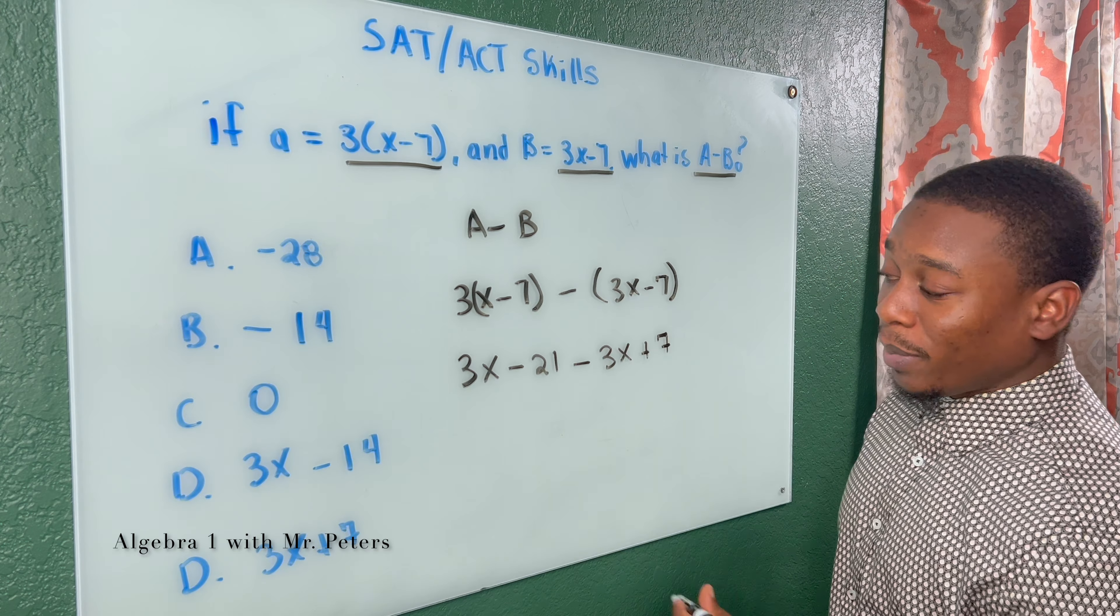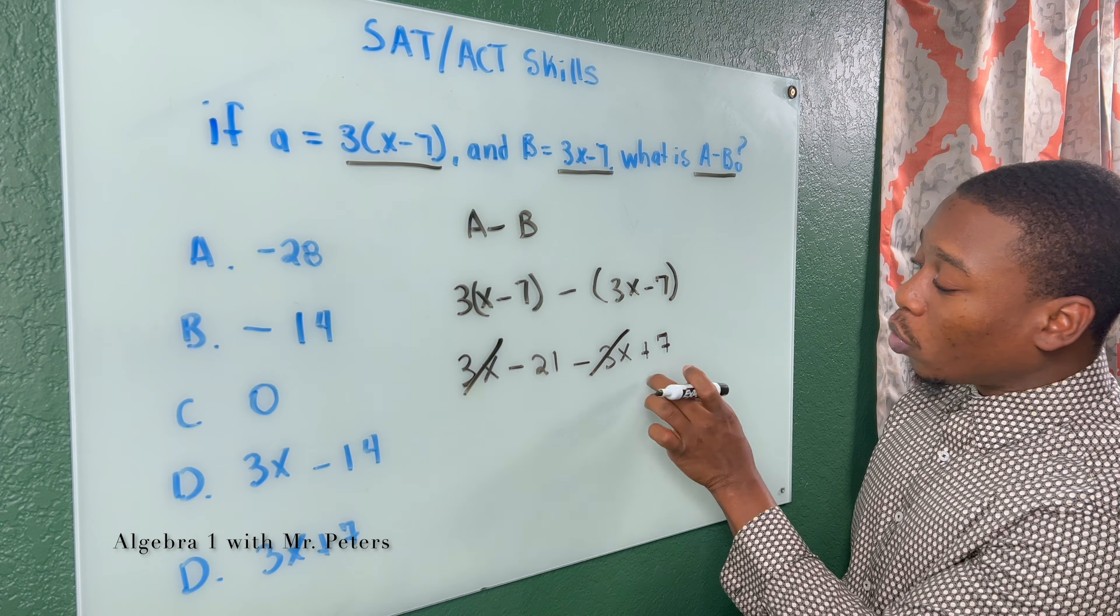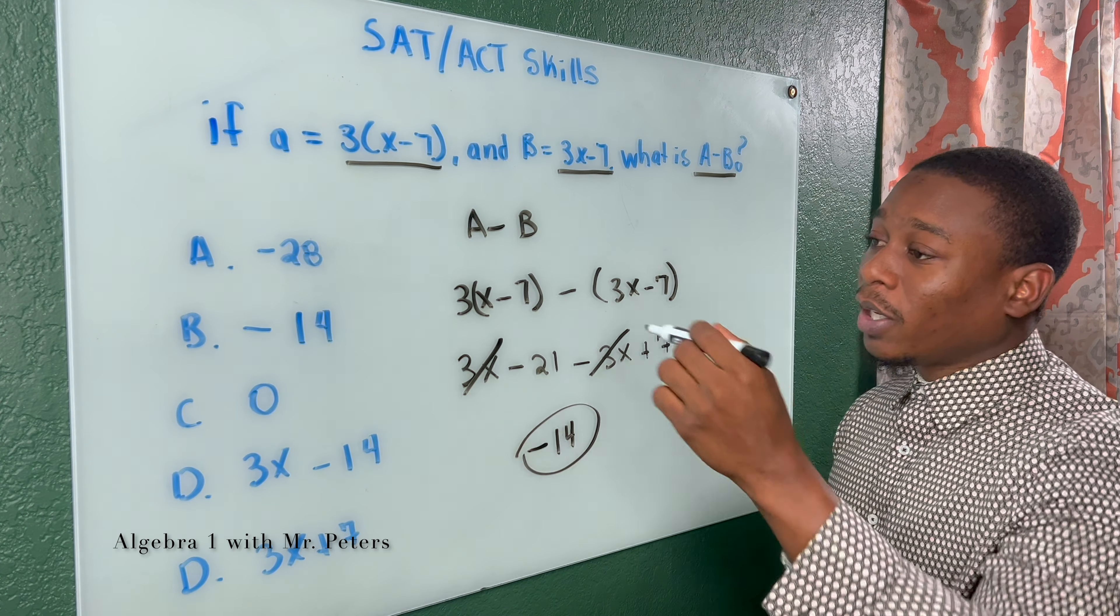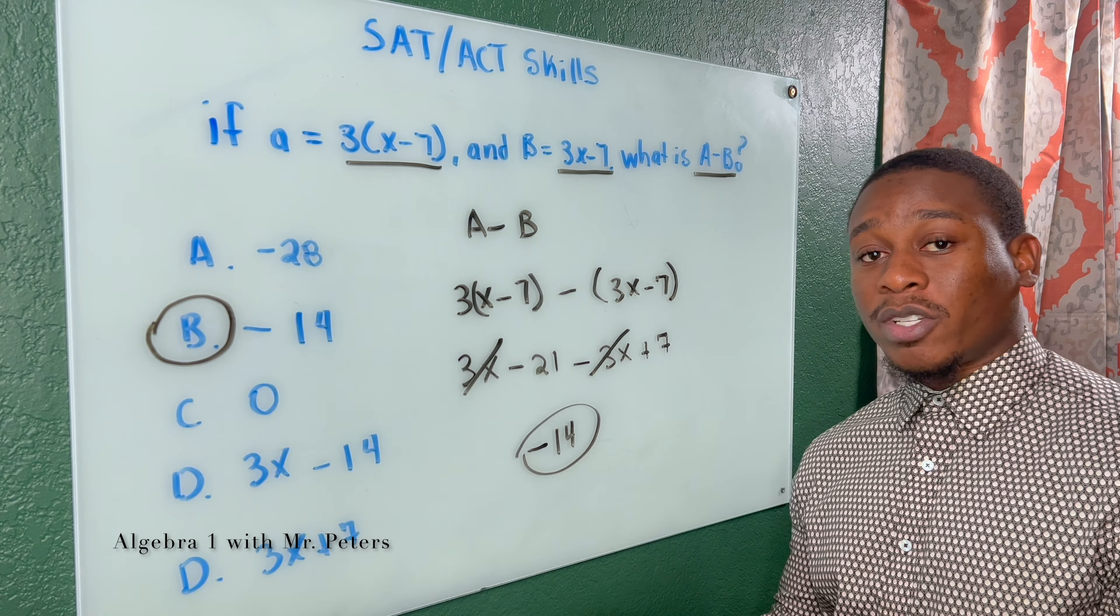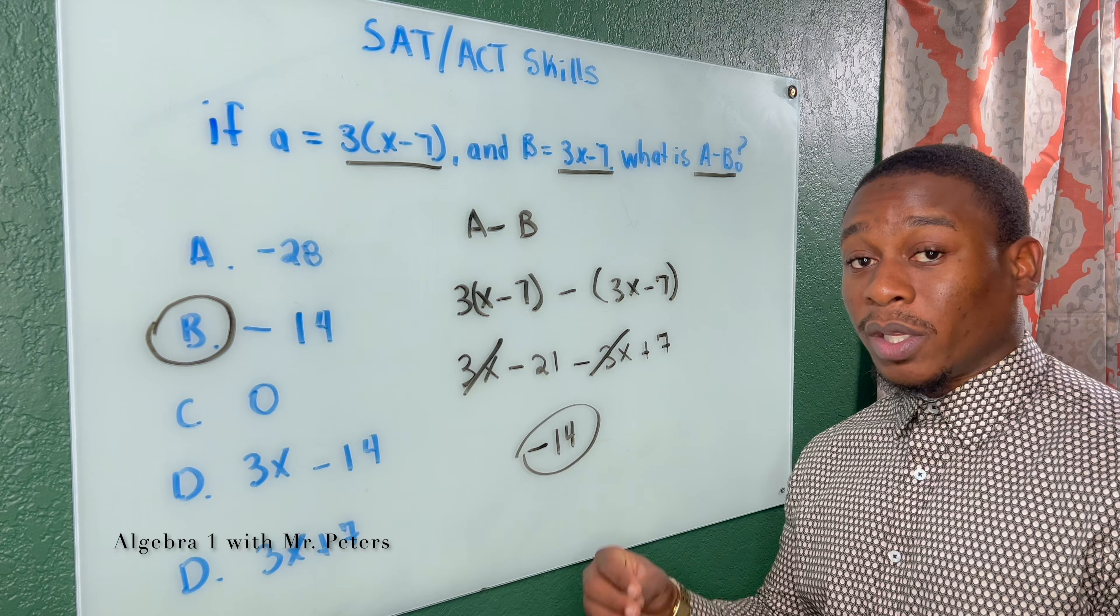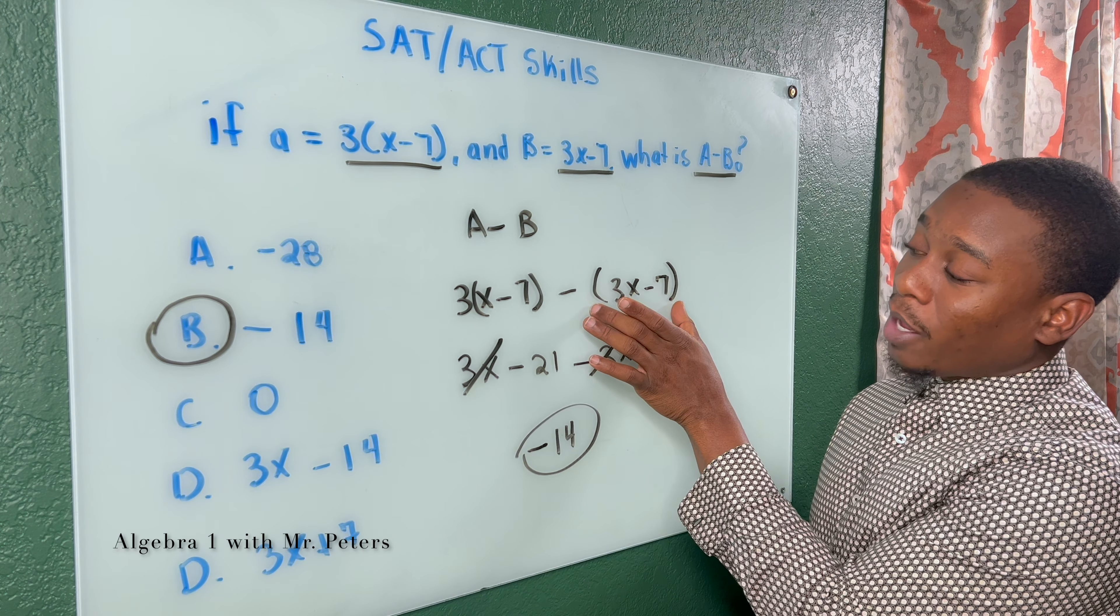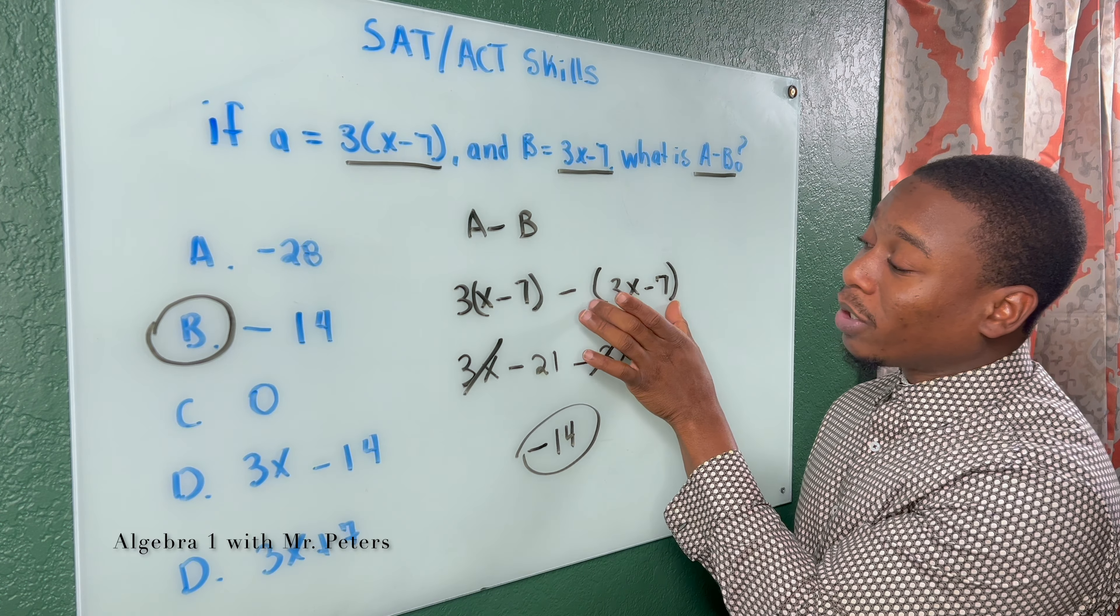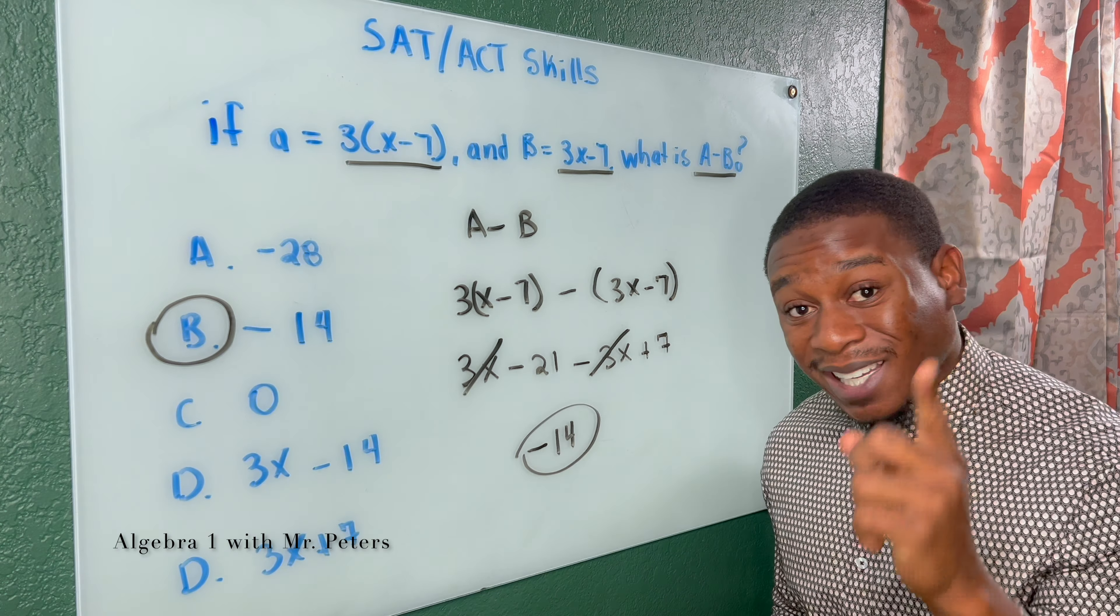So what happens, negative 3X, positive 3X cancel out, negative 21 plus 7 is going to give me negative 14. And my final answer should be B. So this is going to check to see if you understand how to combine polynomial expressions. Just make sure that that second expression you put in parentheses, and that subtraction sign should change the signs of both. They're going to test you for that.